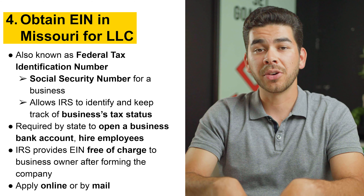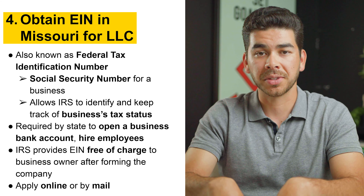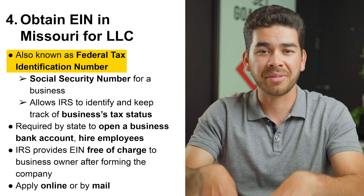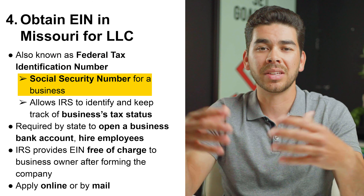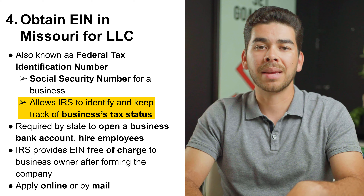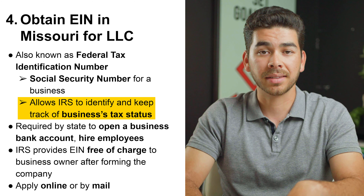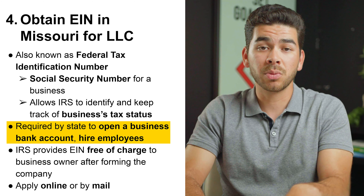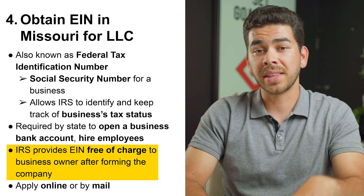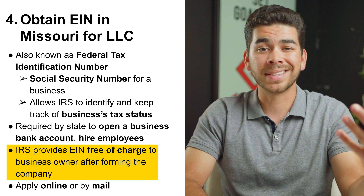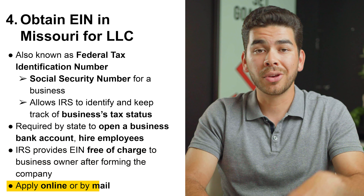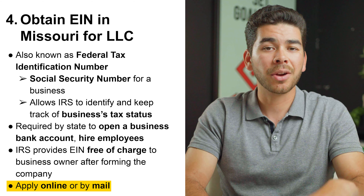Step four is to obtain your EIN in Missouri for your LLC. This EIN number is also known as a federal tax identification number — think of it as a social security number for your business. It allows the IRS to track your business's tax status and is required to open a business bank account and to hire employees. The IRS provides this EIN number free of charge after creating your LLC, and you can apply online or by mail.